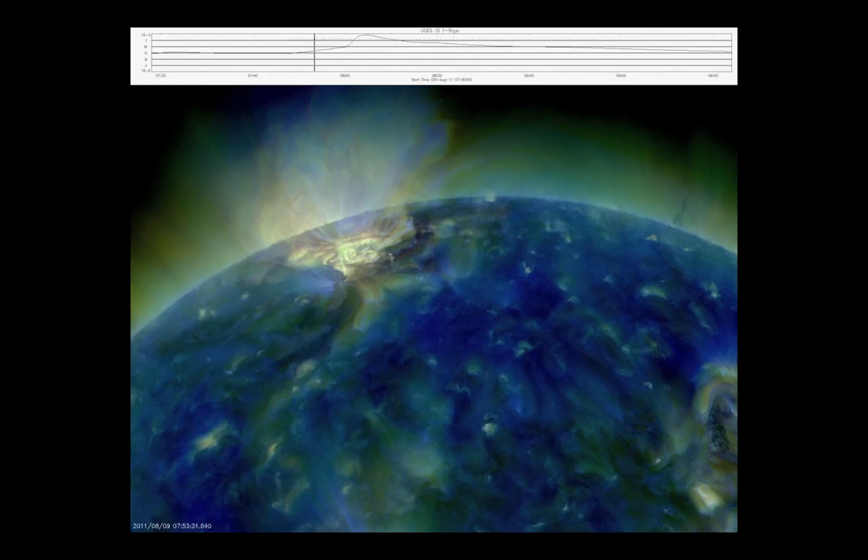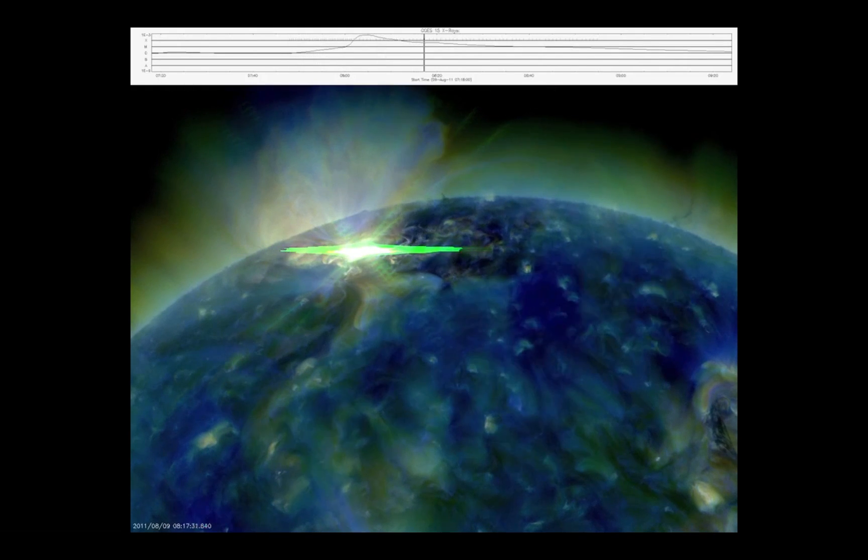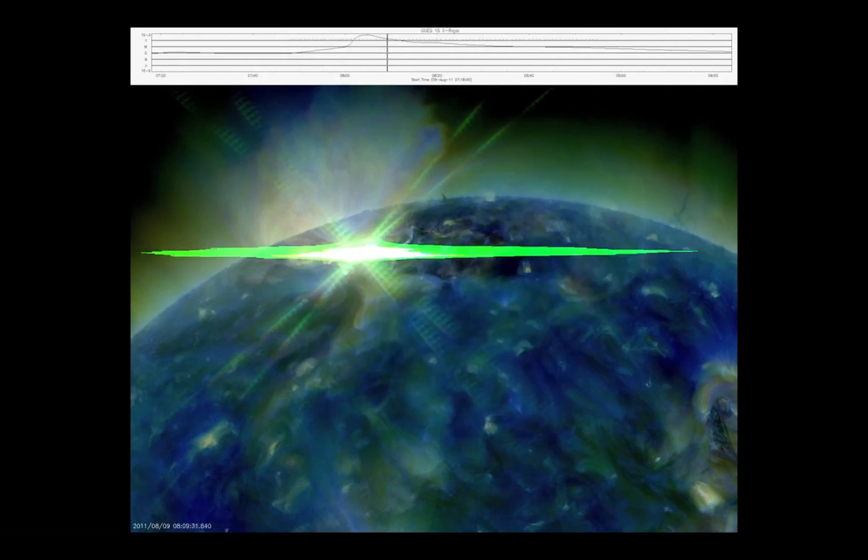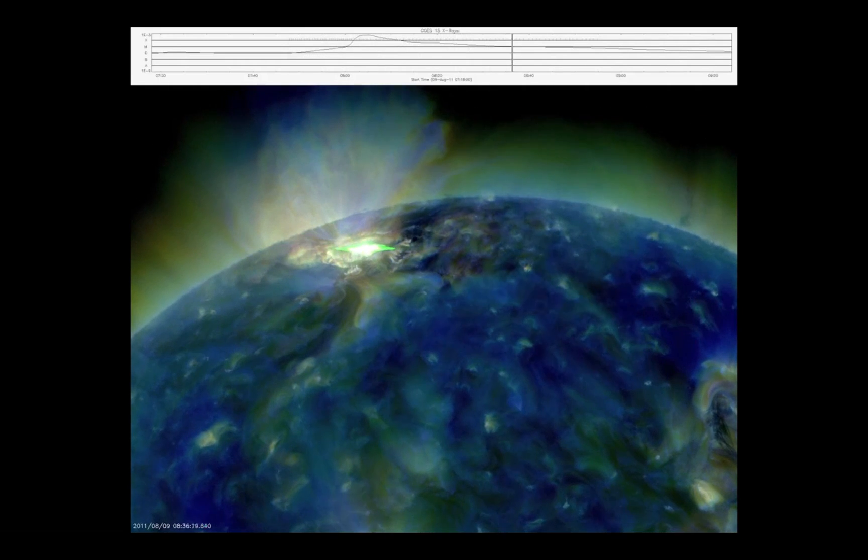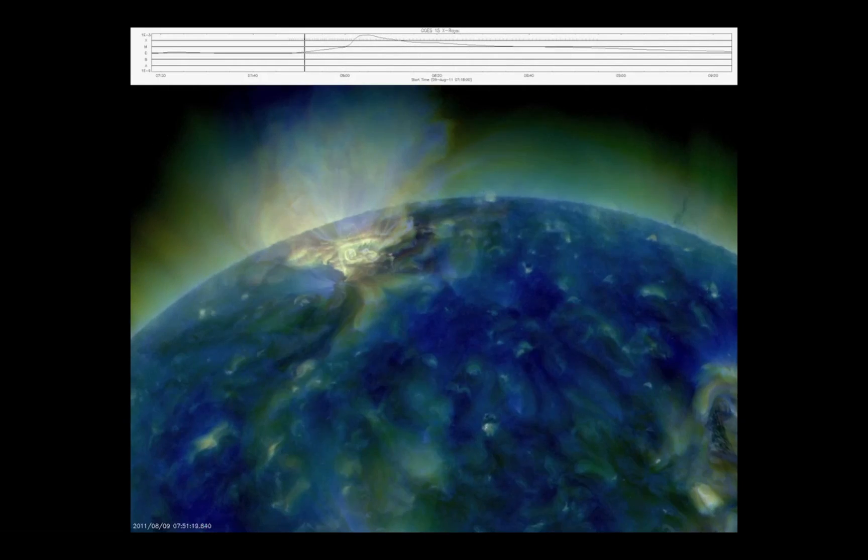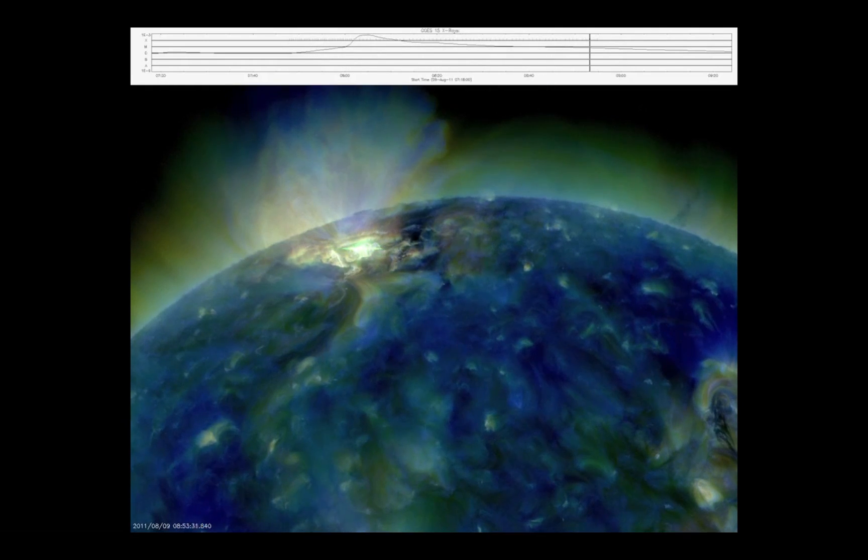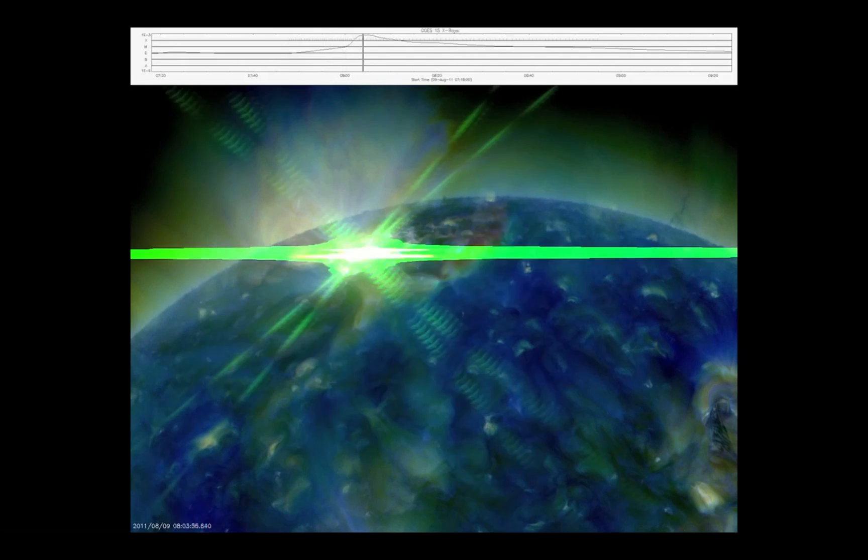But look at this, this is what I woke up to this morning. So here the sun is actually tilted, the image is tilted on its side. But this active region that was coming around the limb, just about to rotate out of view, sent off an X7 flare. This is a really large solar flare.